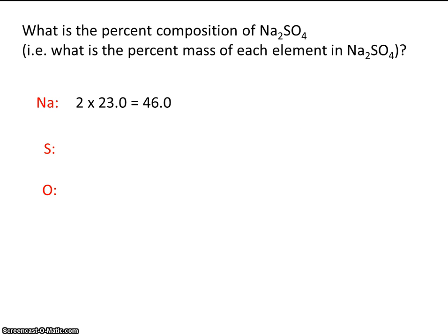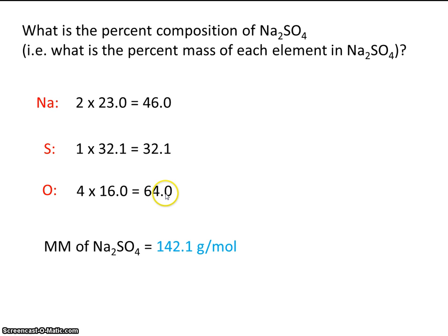Now we have two sodiums, and each sodium has a mass of 23.0, for a total mass of 46.0. We have one sulfur. Sulfur has a mass of 32.1. We have four oxygens. Each oxygen has a mass of 16.0, so that's a total mass of 64.0. So add those up, and the molar mass of sodium sulfate is 142.1 grams for every one mole.